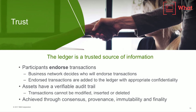This gives us the concept of having a verifiable audit trail of everything — who has owned what across the business network from the time it was created and put onto the blockchain. This is achieved through the four terms of consensus, provenance, immutability, and finality that I mentioned earlier in the presentation.